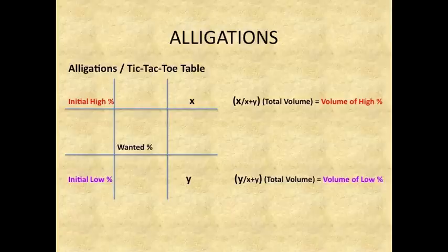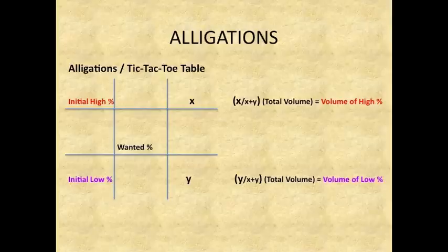On the top left square you will enter the initial high strength. On the bottom left square you will enter the initial low strength. In the middle square you will enter the wanted strength. On the top right square write an X, and on the bottom right square write a Y.